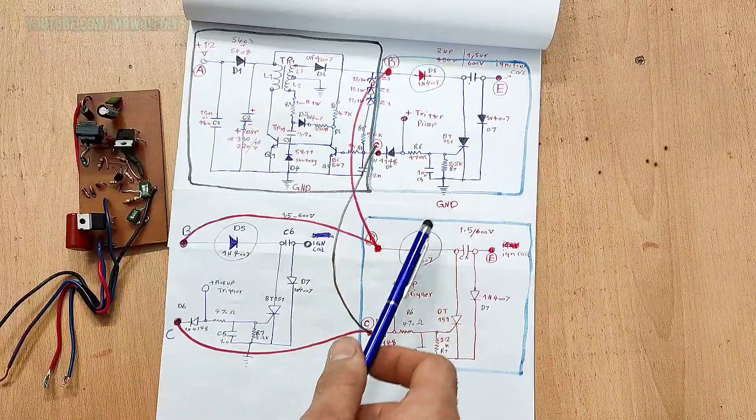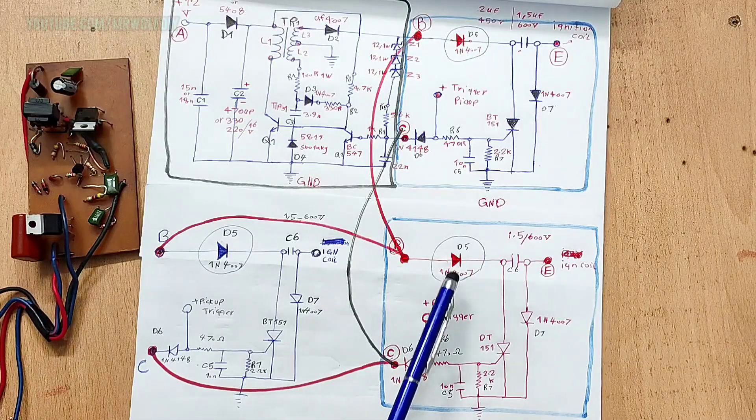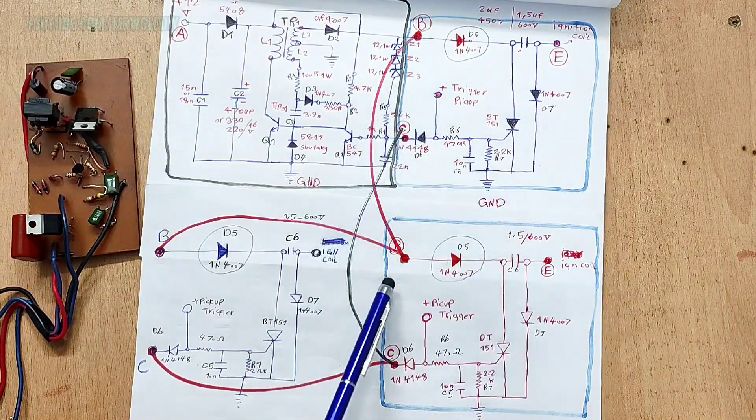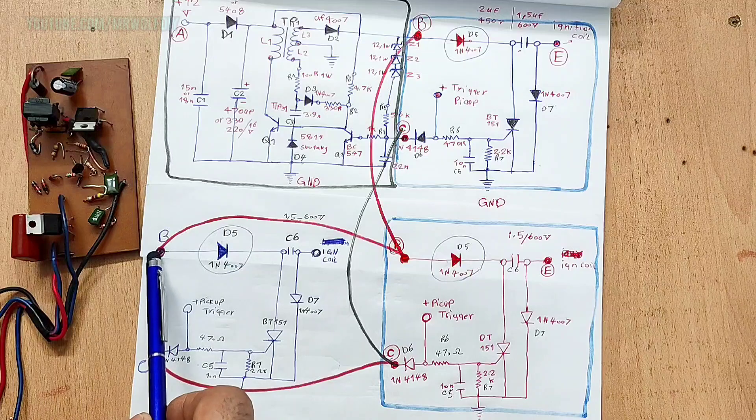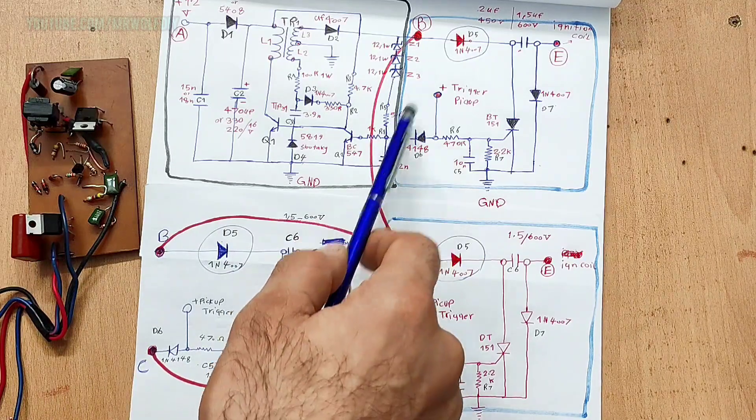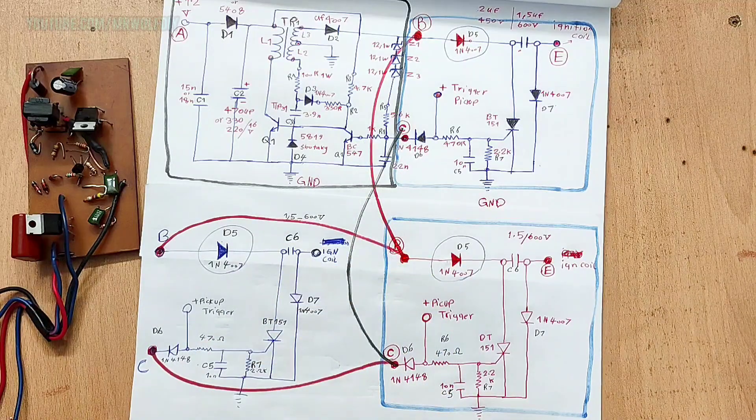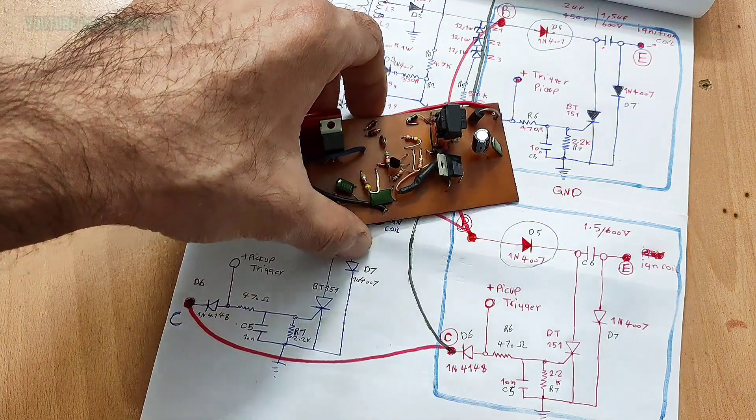To add an extra unit, you just need to hook it up in parallel to the circuit: B point to B, B point to B, C point to C, C point to C. That's it.